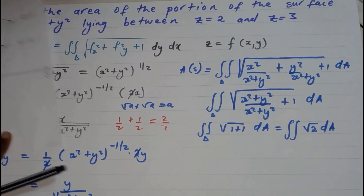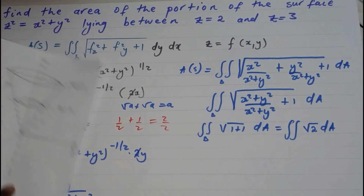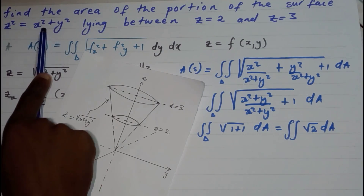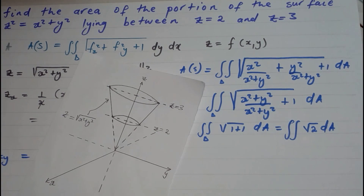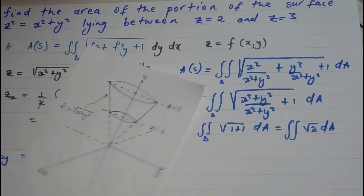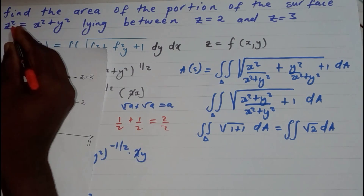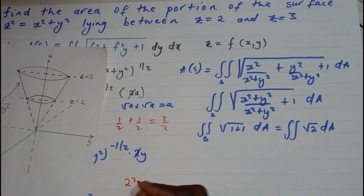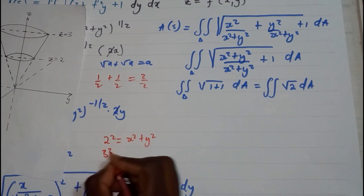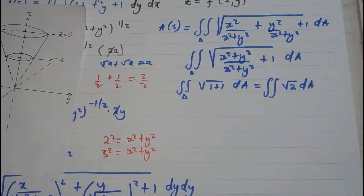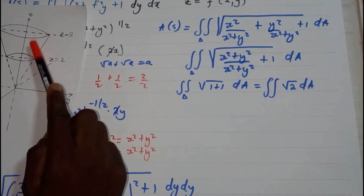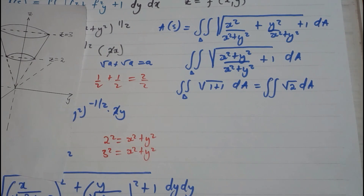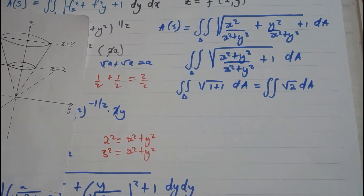Now the tricky part is the limits. Solving z = 2 with z² = x² + y² gives 4 = x² + y², a circle of radius 2. Solving z = 3 gives 9 = x² + y², a circle of radius 3. The region of integration is the annular region between these two circles in the xy-plane.